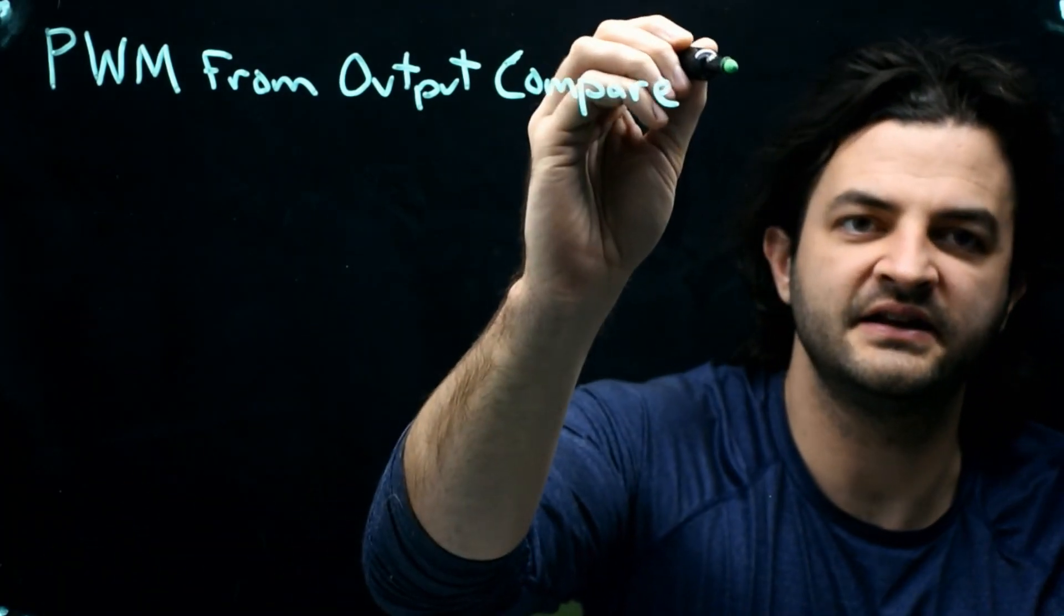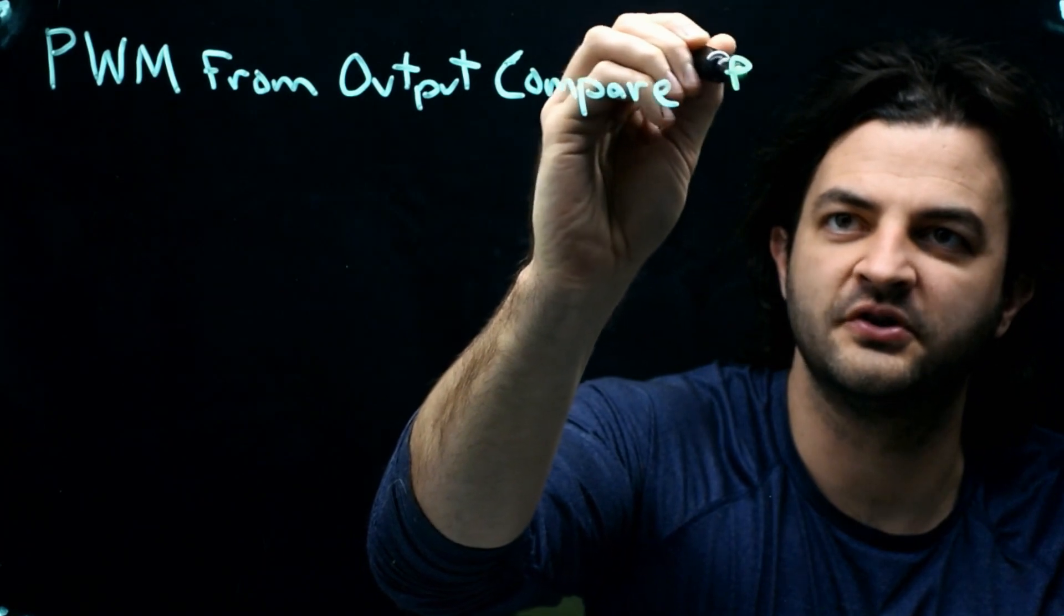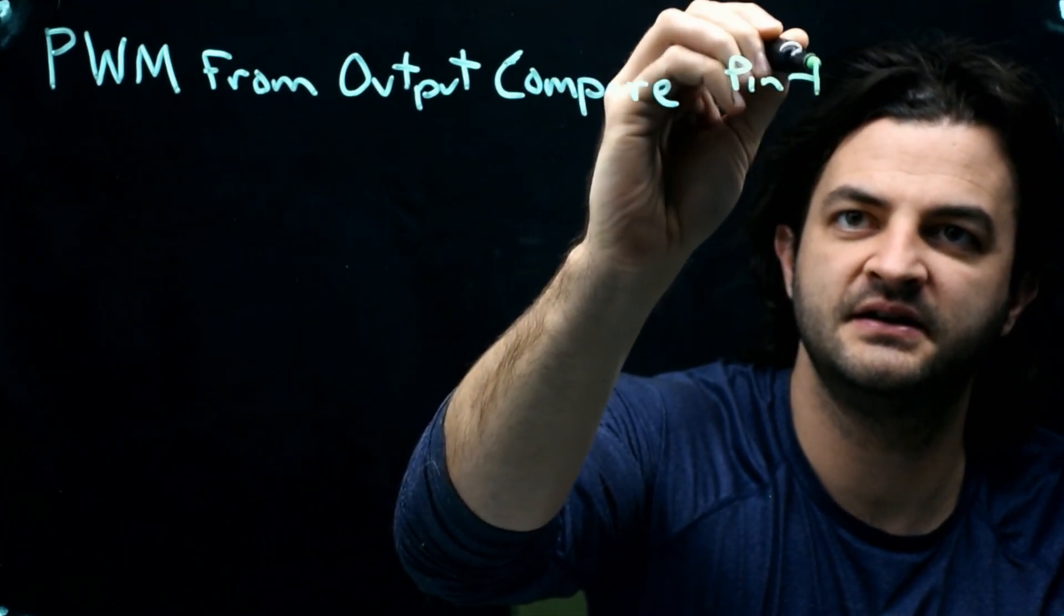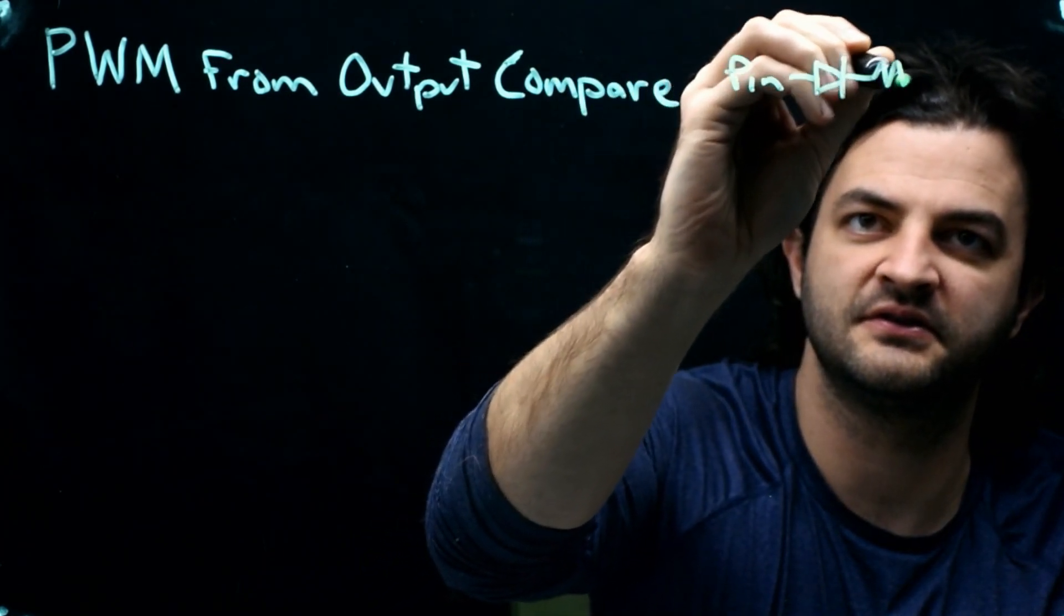Let's take a quick look at an LED circuit where we're controlling it by a pin. So we have a pin, an LED, a resistor to ground.